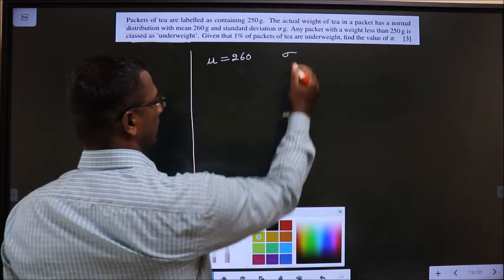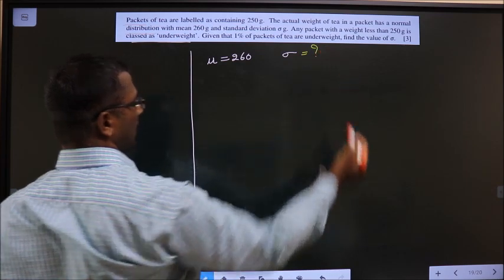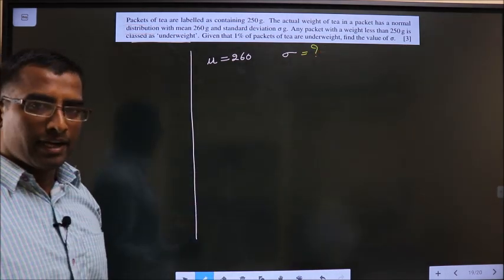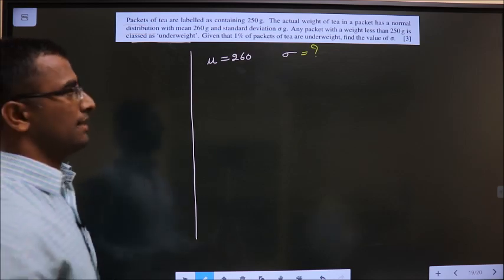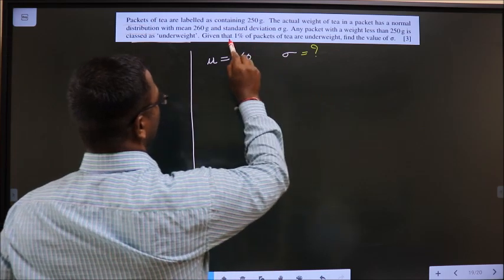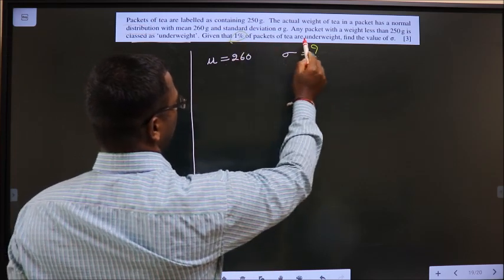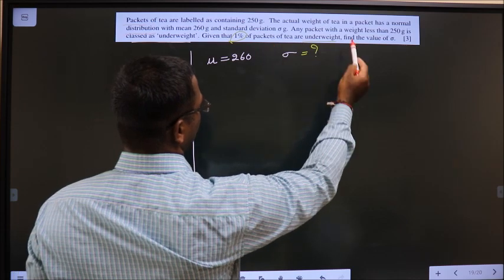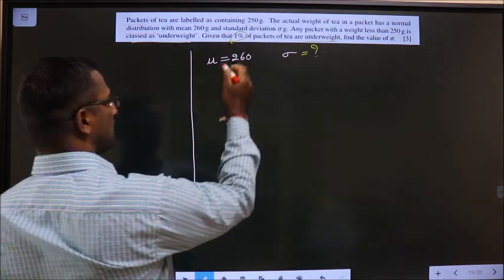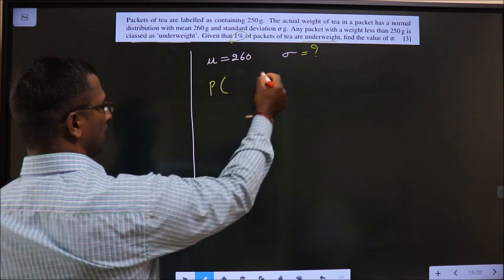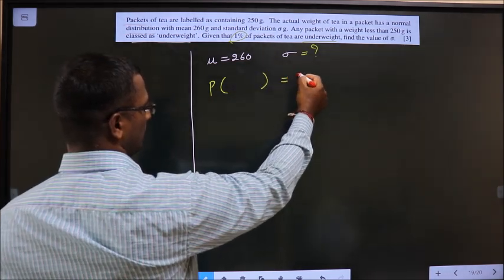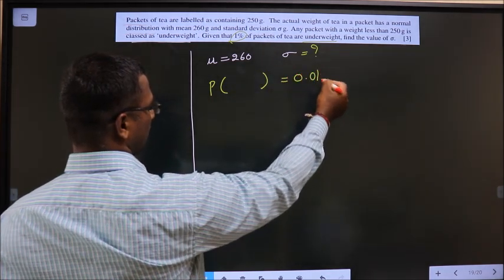So you need to find standard deviation value. For that a condition is given: 1% of the packets of tea are underweight. 1% is nothing but probability, so 1% is 0.01.